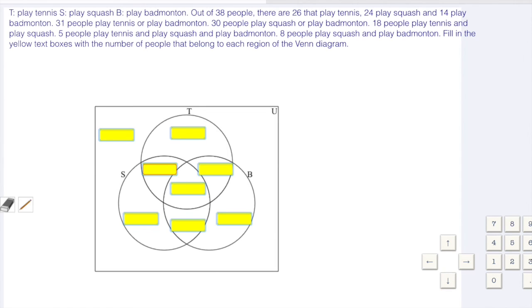31 people play tennis or play badminton. 30 people play squash or play badminton. 18 people play tennis and play squash. 5 people play tennis and play squash and play badminton. 8 people play squash and play badminton. Fill in the yellow text boxes with the number of people that belong to each region of the Venn diagram.